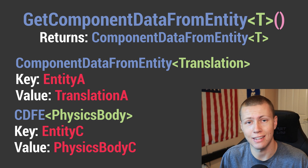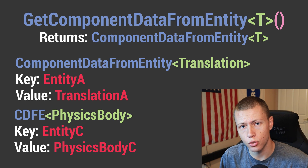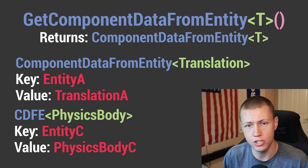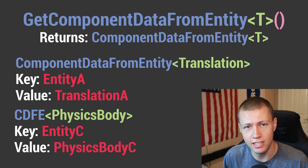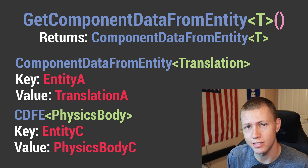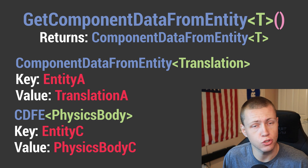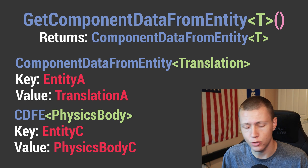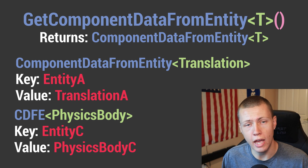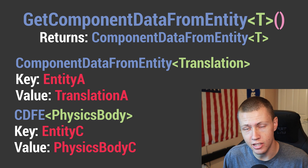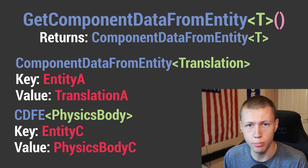It's literally going to return a collection of every single entity that has that component on it. So later in the tutorial we'll create one of these collections based on the Translation component, and it's going to return every single entity in the game world that has a Translation component — not only all the potential leader entities, but also the follower entity as well as the stage. Once we have that collection, we use the actual entity we want as the key to return the proper value.